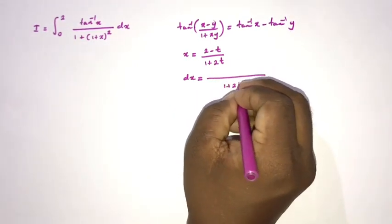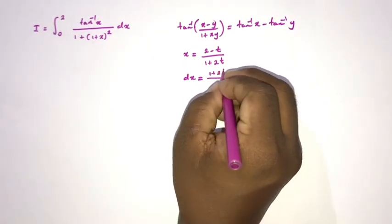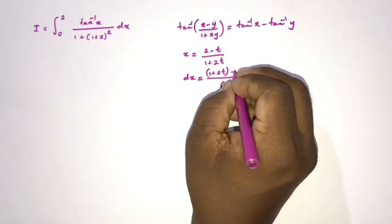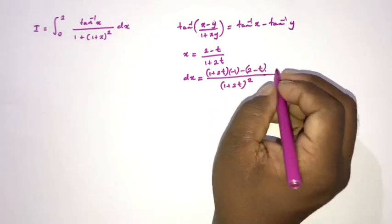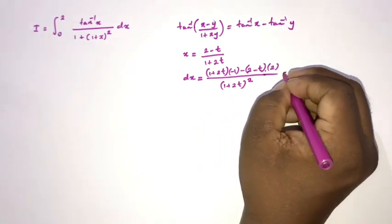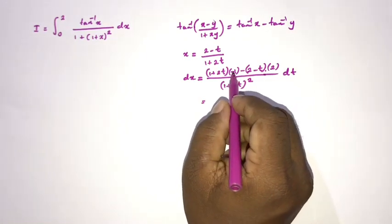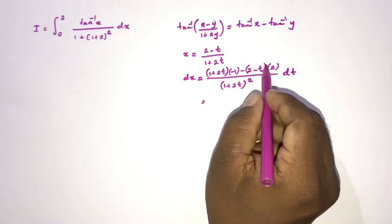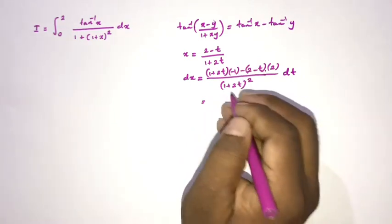Now we should differentiate this substitution. So dx equals — applying the quotient rule — the denominator is (1 plus 2t) squared. The numerator is: (1 plus 2t) times the derivative of (2 minus t), which is minus 1, minus (2 minus t) times the derivative of (1 plus 2t), which is 2. Then dt.